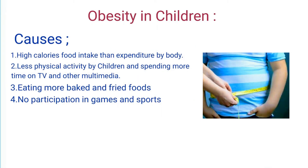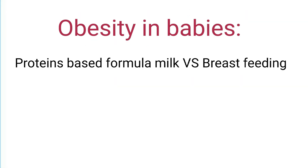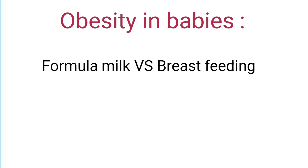Causes of Obesity in Children. The main causes of obesity in children include: Number 1, High calorie food intake greater than expenditure by the body; Number 2, Less physical activity and spending more time on TV and other multimedia; Number 3, Eating more baked and fried foods; Number 4, No participation in games and sports. Medical causes include hormonal imbalance like hypothyroidism. Obesity can start in a baby even before birth when a pregnant woman consumes unhealthy foods with excessive sugar and fats, increasing risk of overweight babies. Babies on protein-based formula milk are more likely to develop obesity than those on breast milk feeding, and formula milk also increases risk of adult obesity.